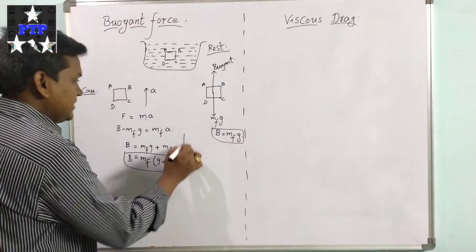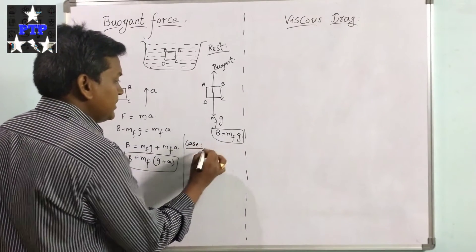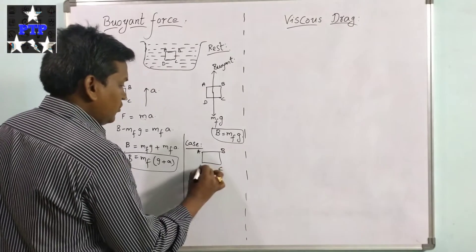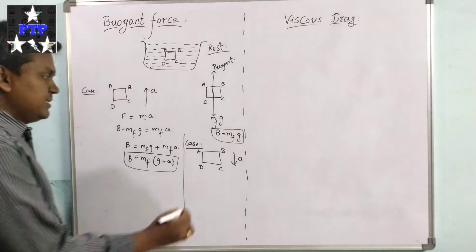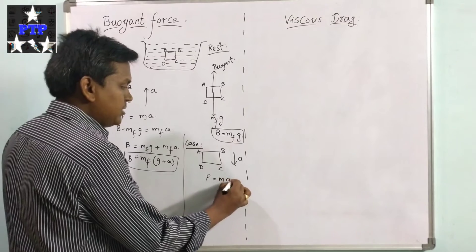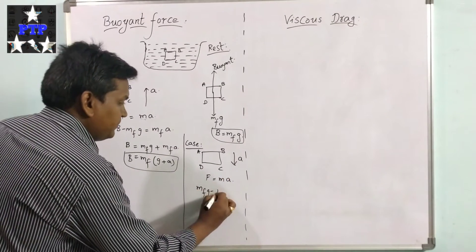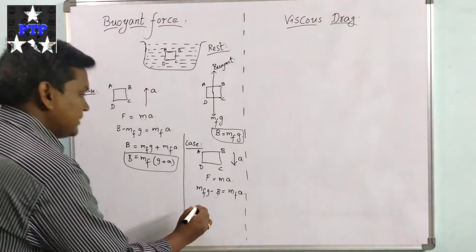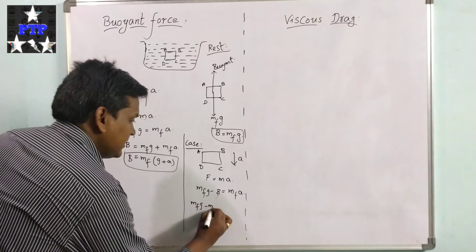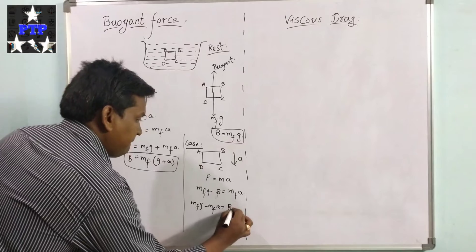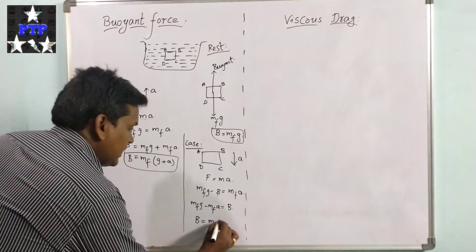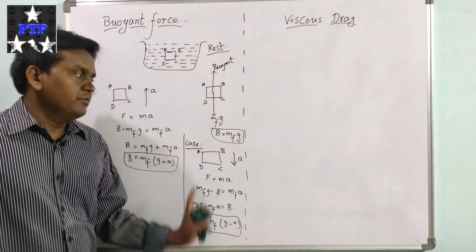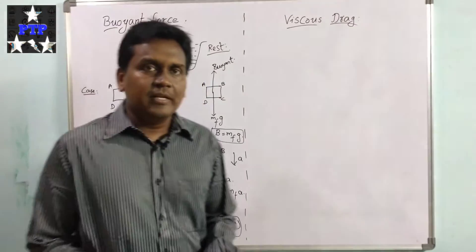Now consider the situation when the part of the fluid A B C D is moving vertically downward with an acceleration a. From Newton's second law, the equation becomes: B minus m_f g equals negative m_f a, so biont force B equals m_f times (g minus a).